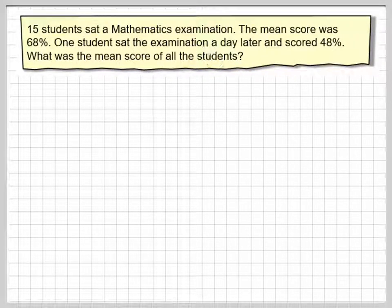15 students sat in a mathematics examination, the mean score was 68%. One student sat in the examination a day later and scored 48%. What was the mean score of all the students?